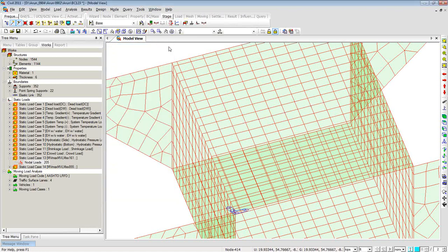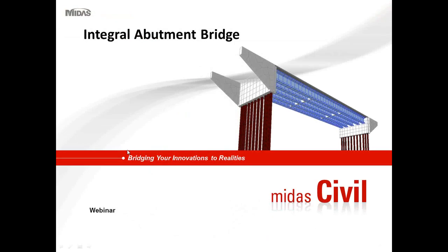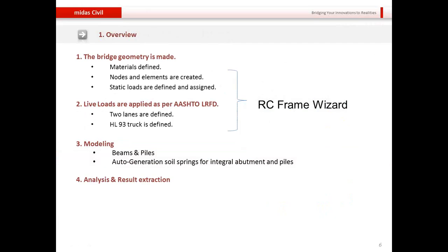Now I'll move on to the second portion of the webinar — an integral abutment bridge which will have pile members, the abutment wall, a wing wall, girders underneath, intermediate diaphragms, and the deck on top. Again we'll be defining material properties, then nodes and elements will be created. Static loads and live loads will all be done using the RC Frame Wizard. Once the model is generated, you can go in, modify, and customize the model to suit your field requirements.